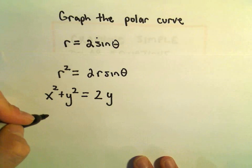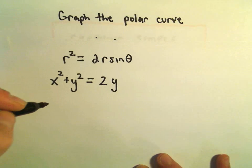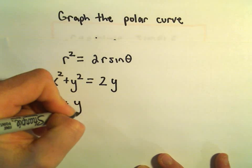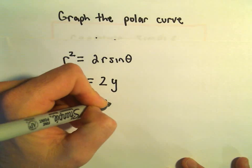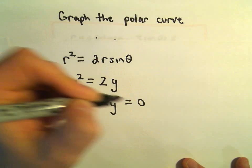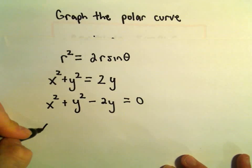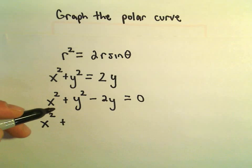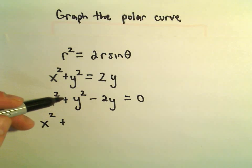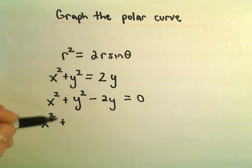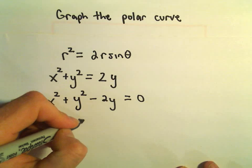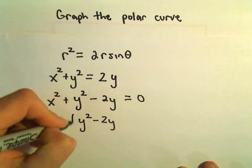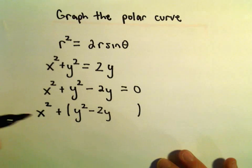Now I'm going to do the same thing we saw in another example. I'm going to subtract the 2y over to the left side, and now I'm just going to complete the square. So x squared — if there's no linear term, no x to the first power, we don't have to worry about that part. So y squared minus 2y is the part we'll complete the square on.